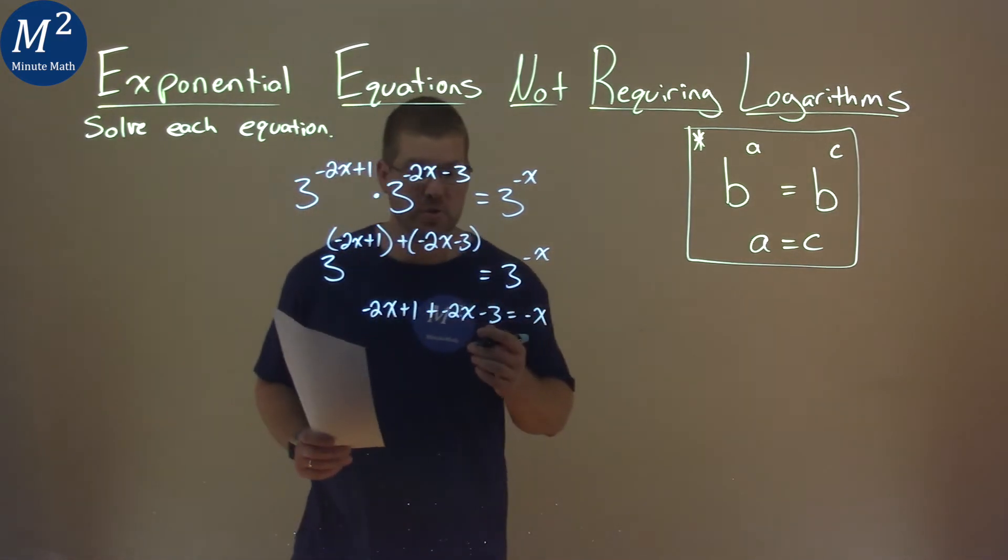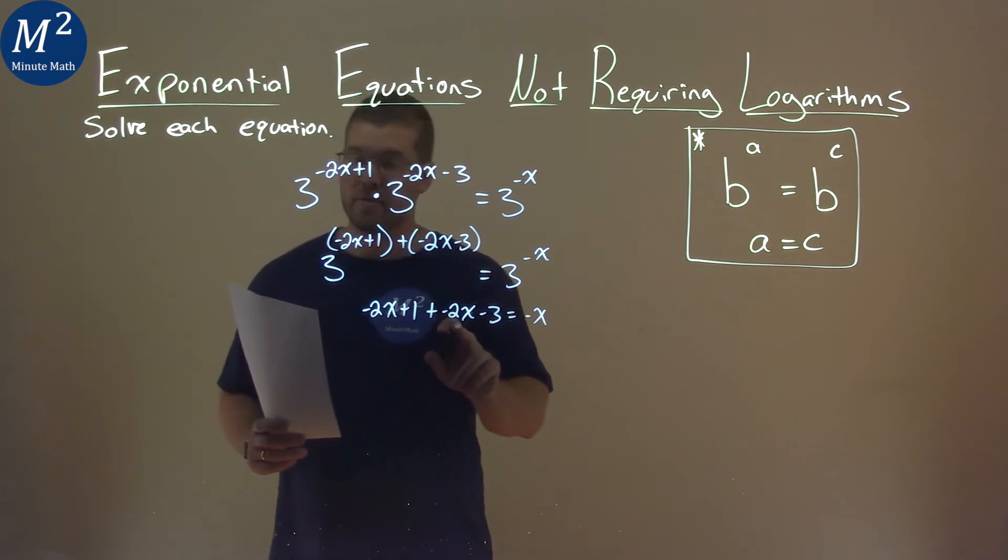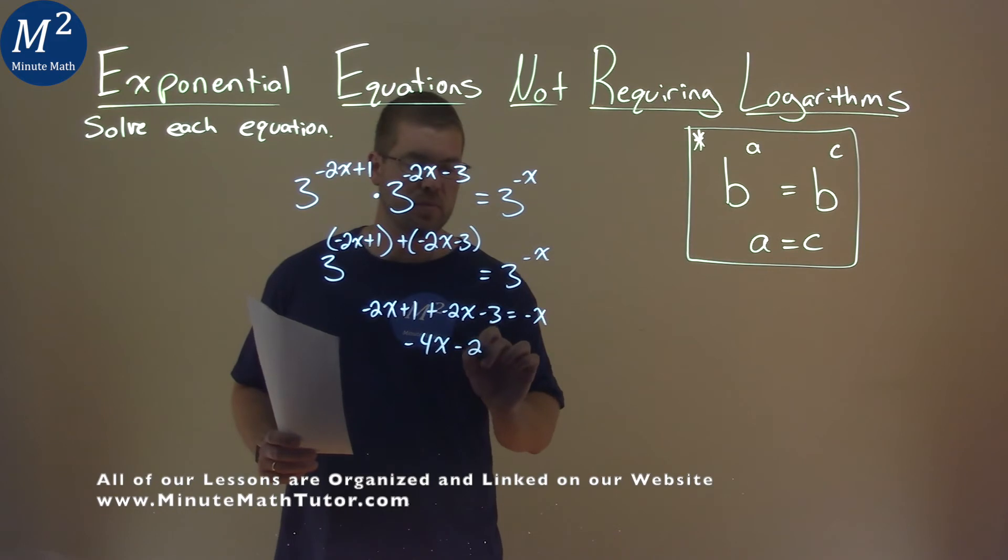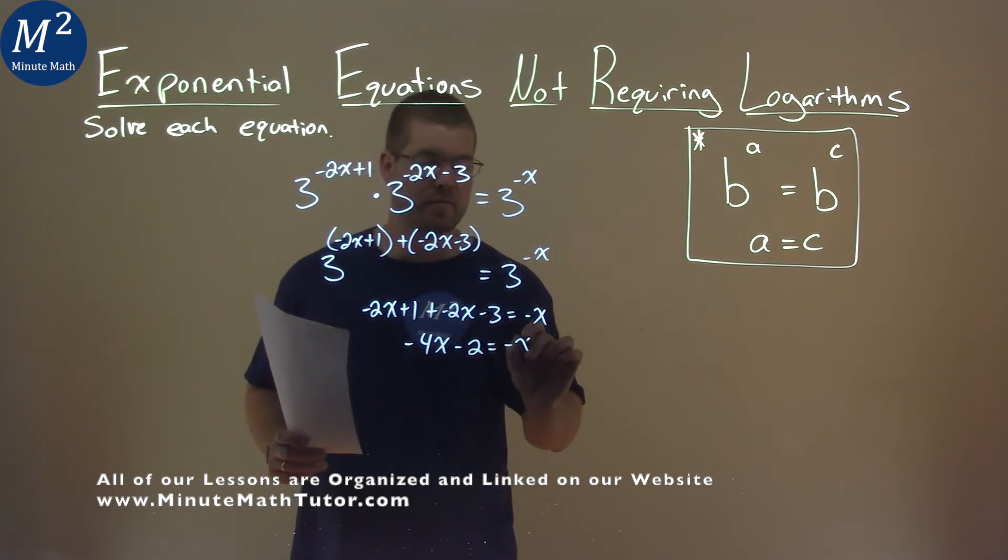Let's combine our like terms, negative 2x and a negative 2x is a negative 4x. 1 plus a negative 3 is a negative 2, and that's equal to a negative x.